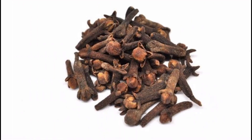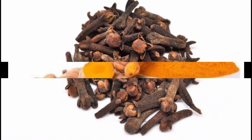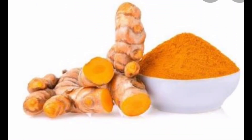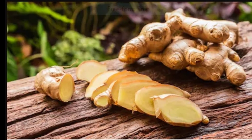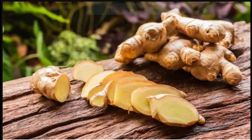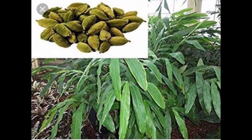Cloves — gramboo is a flower bud, so we use the flower bud as the edible part. Turmeric and ginger — there is a stem for the edible part. Now, we also make use of plants as spices.